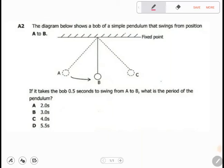How can we answer this question? The question says the diagram below shows a bob of a simple pendulum that swings from position A to B, so only A to B. If it takes the bob 0.5 seconds to swing from A to B, what is the period of the pendulum?